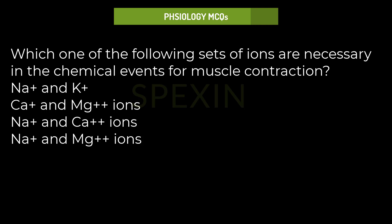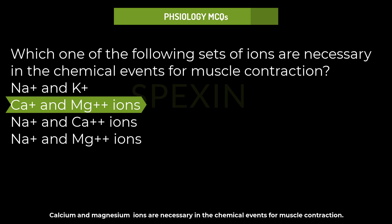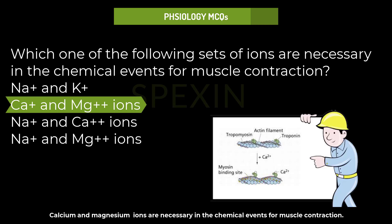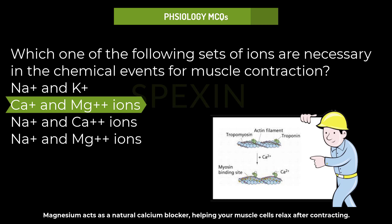Which set of ions is necessary in the chemical events for muscle contraction? Options: sodium and potassium ions, or calcium and magnesium ions, or sodium and calcium ions? Calcium and magnesium ions are necessary in the chemical events for muscle contraction. Calcium triggers contraction by reacting with regulatory proteins that, in the absence of calcium, prevent interaction of actin and myosin. Magnesium acts as a natural calcium blocker, helping muscle cells relax after contracting.